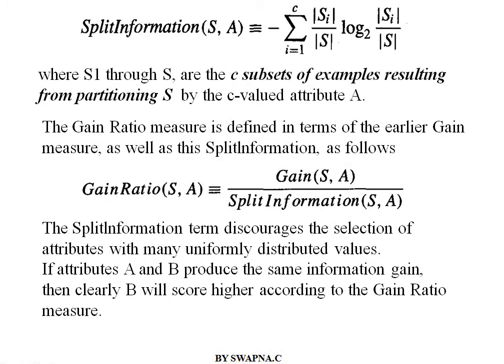To get the gain ratio, we first calculate the split information. The split information formula is: negative summation of (Si / S) log2 (Si / S). Here, Si through S are the C subsets of examples resulting from partitioning S by a C-valued attribute. For a particular attribute's possible values, the subsets of examples resulting are represented as Si.